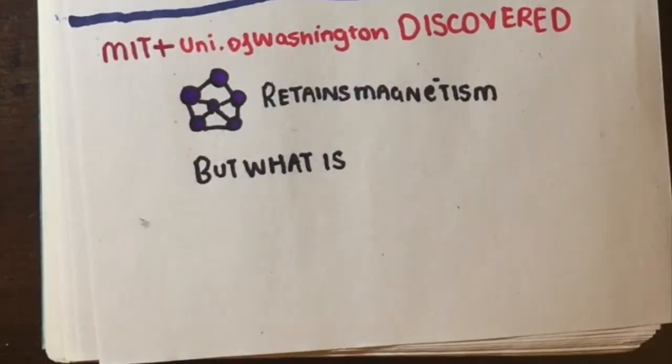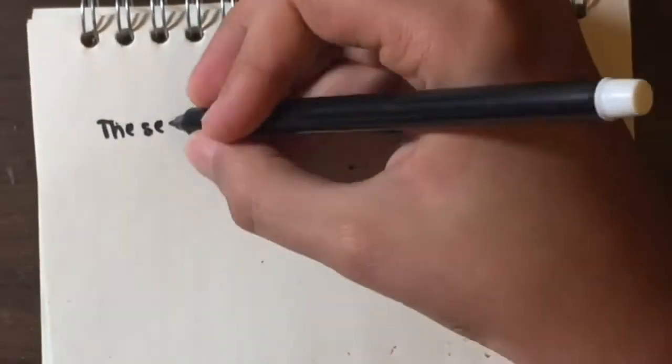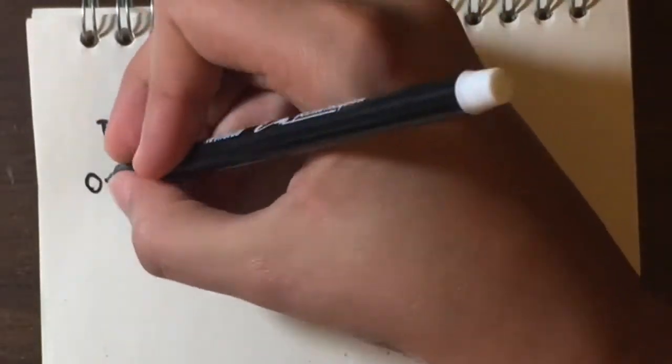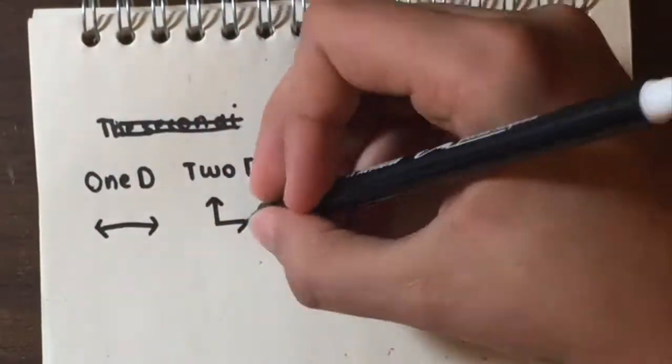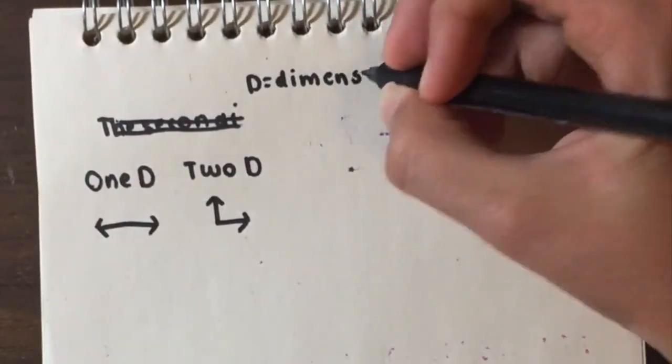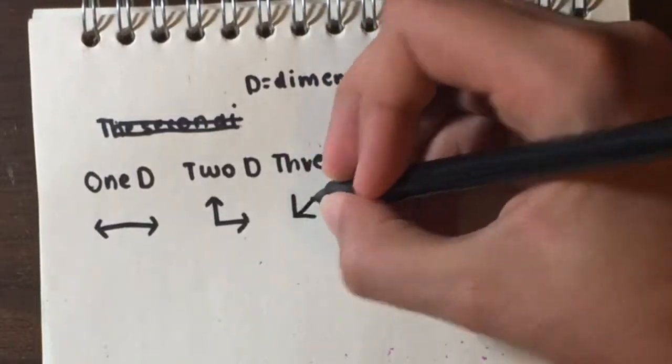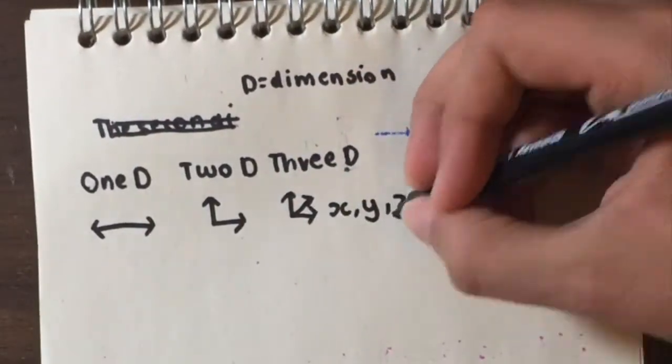But first, let's define what 2D actually is. When a substance is one-dimensional, it has only one single point on the y-axis. If a substance is two-dimensional, it has height and depth, meaning it has a y and x-axis.